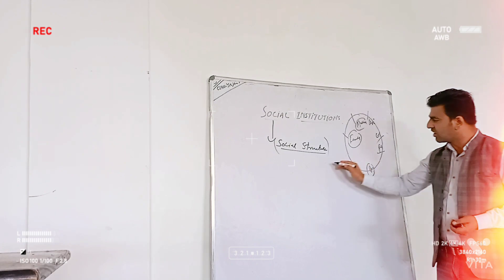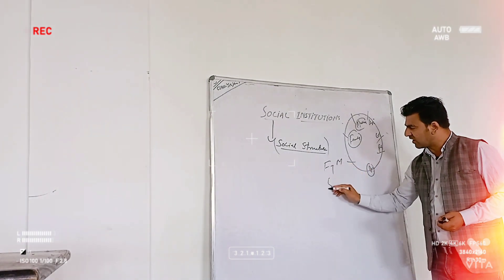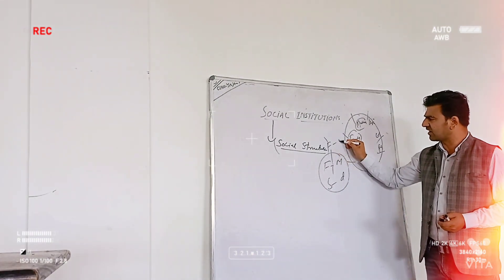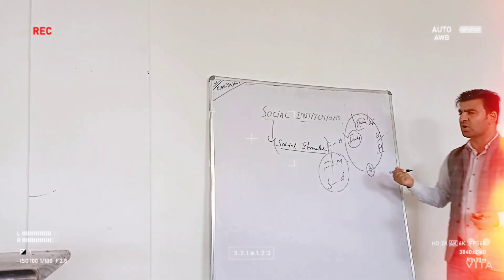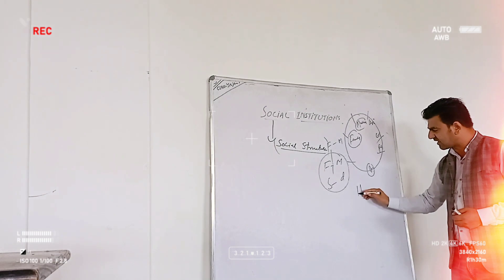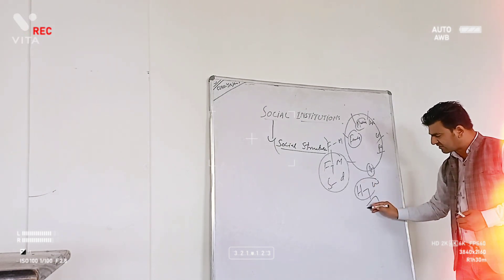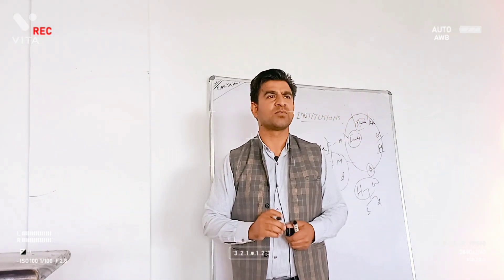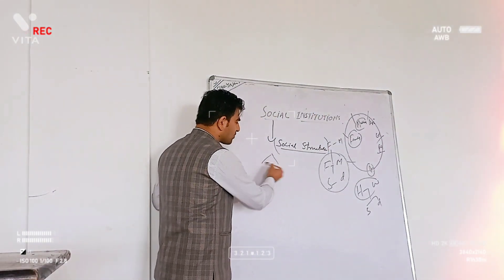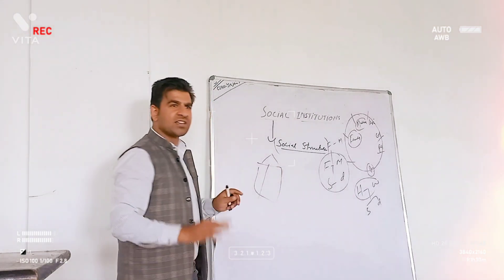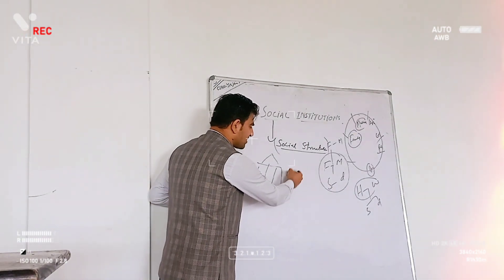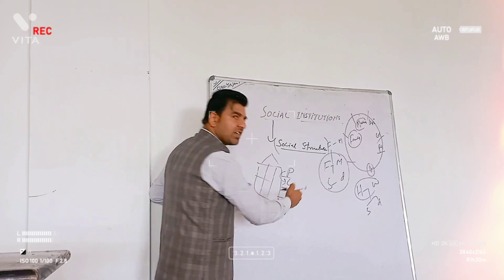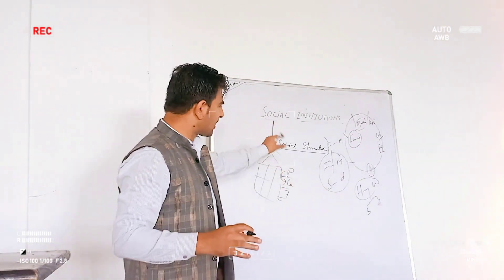For example, the family structure typically consists of father, mother, son, and daughter. In a joint family, there may also be grandparents. Similarly, marriage has a set structure of husband and wife, and possibly children. The educational system also has a particular structure — the principal at the top, followed by lecturers, teachers, and other subsidiary staff.